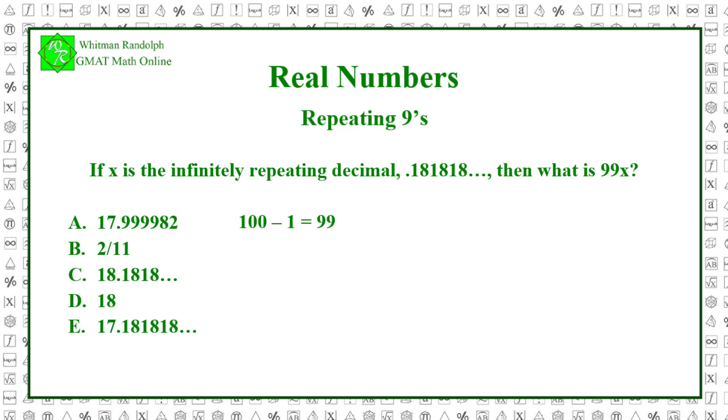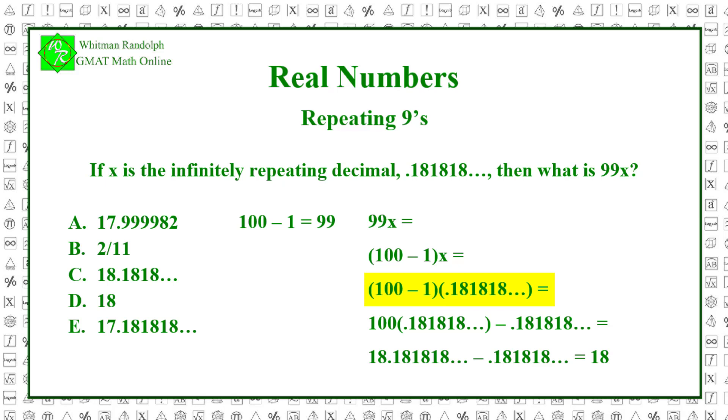So we have the following: 99x equals (100 - 1)x, which equals (100 - 1) times .181818, etc. And that equals 100 times .181818 and so forth, minus .181818 and so forth. That equals 18.181818, etc., minus .181818, etc., which equals 18. So the correct answer is D.